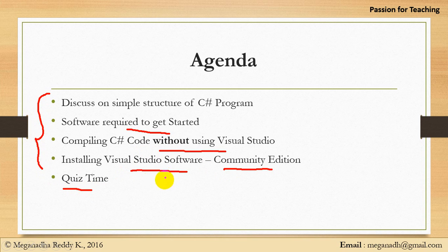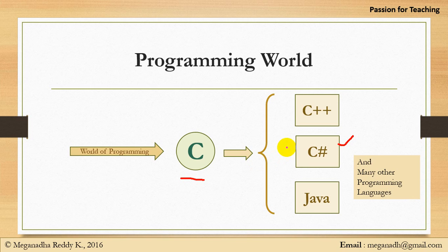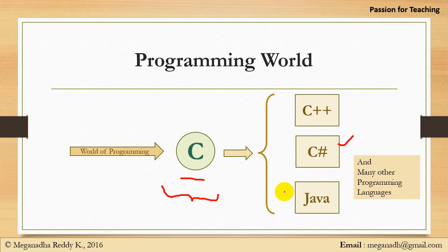If you are a programmer looking to learn C#, you might already have some experience with C language, since C is covered in most college subjects. If you only know C language, learning C# will be a little bit easier for you. Even if you have no programming experience at all, C# is not that difficult to learn. We'll reuse the same concepts like if-else, for loop, while loop etc. But remember, C is a procedural programming language whereas C#, C++, and Java are object-oriented programming languages.